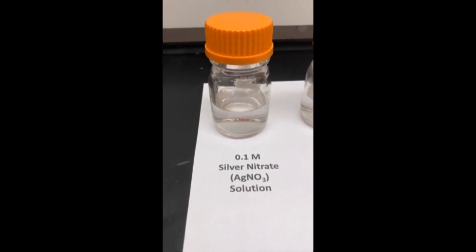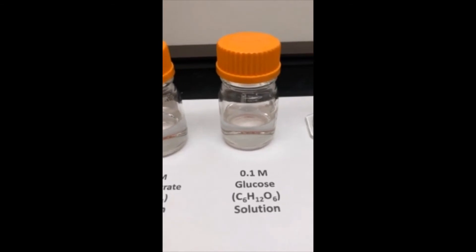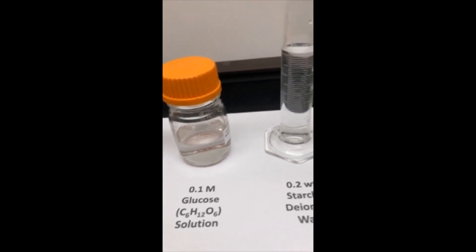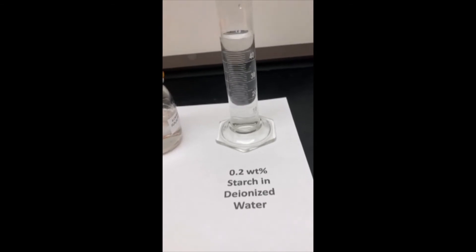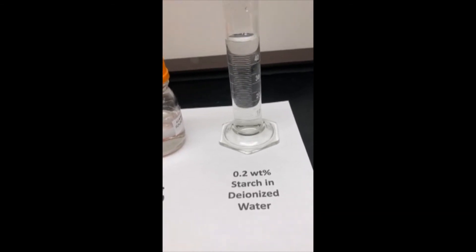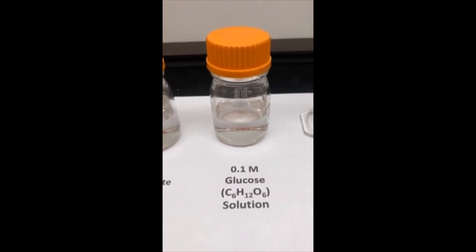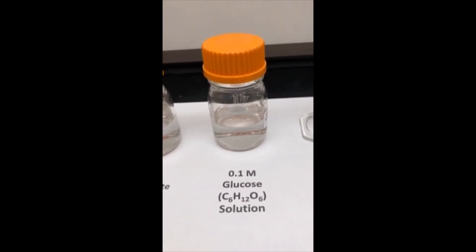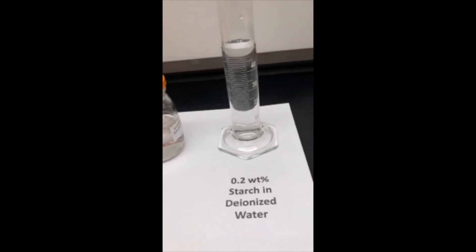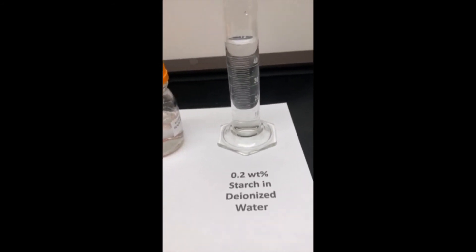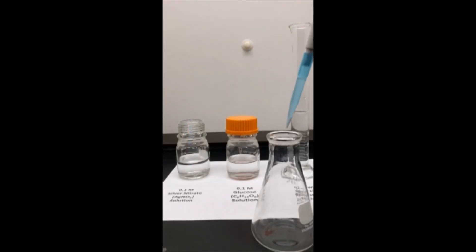There are many chemical synthesis routes to producing nanoparticles. In this case, we are fabricating silver nanoparticles using a 0.1 molar solution of silver nitrate as our silver source, a 0.1 molar glucose solution, and a 0.2 weight percent solution of starch in deionized water. The glucose reduces the silver ions in the silver nitrate solution and the starch is present to coat the silver metal as it forms to prevent the silver from agglomerating and forming large particles.